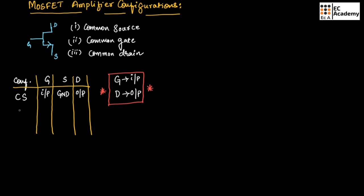In common gate configuration, gate is connected to ground. The two terminals left are source and drain. Since drain terminal is preferred as output, drain is considered as output and source is considered as the input side.